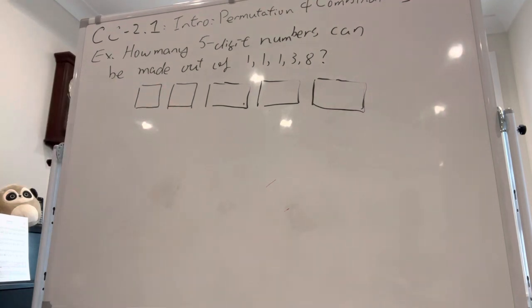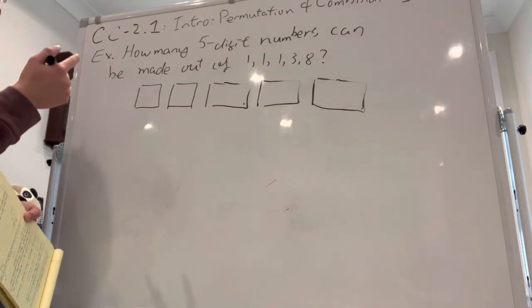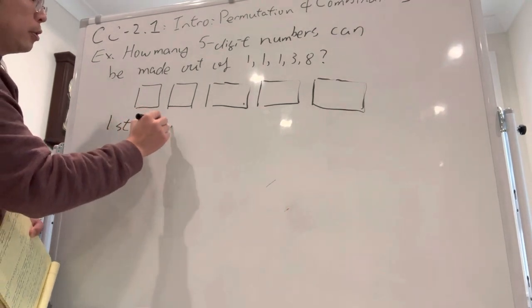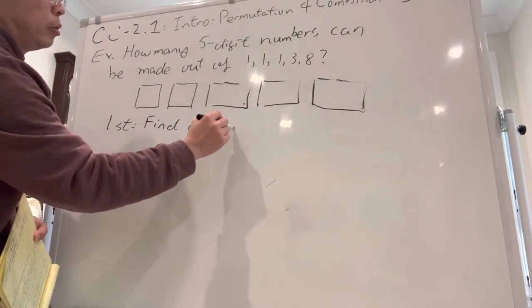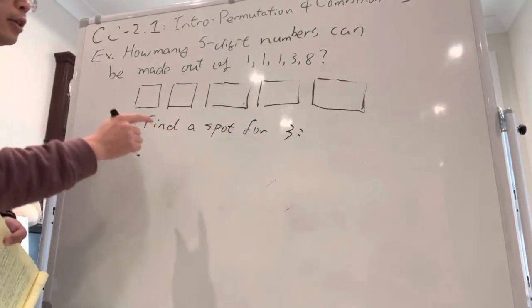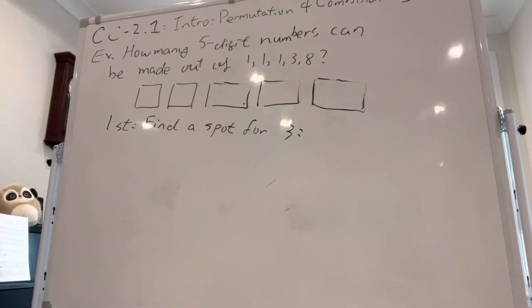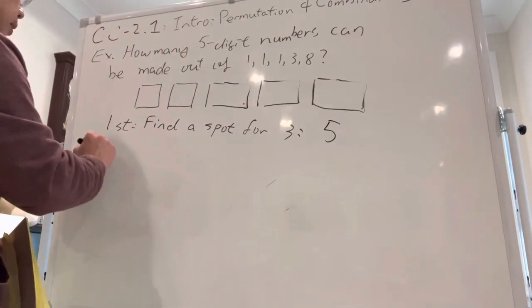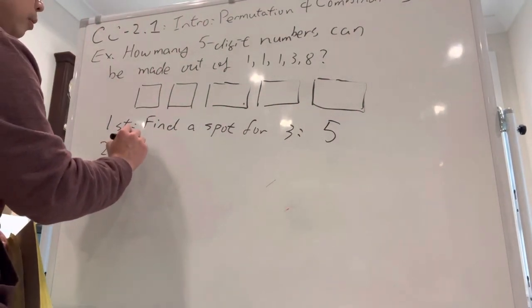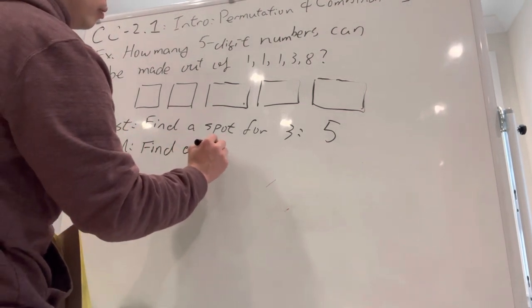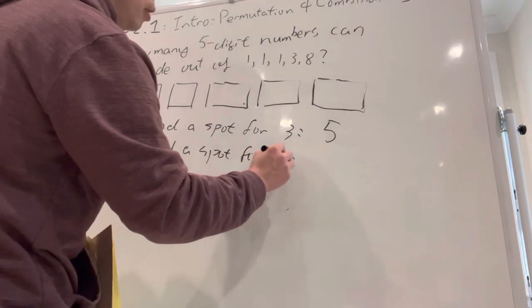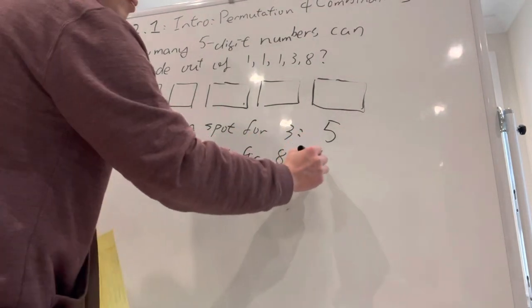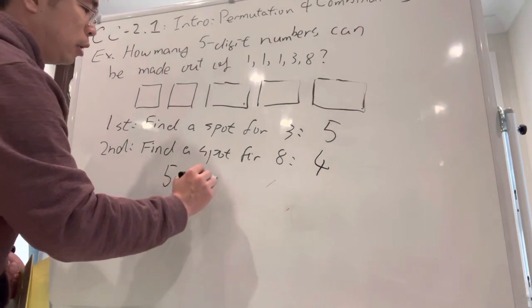The way we could do it is first we find a spot for 3. Can someone tell me how many spots are there for 3? The second step is find a spot for 8. How many spots are there? Four, okay. So therefore it is 5 times 4 equals 20.